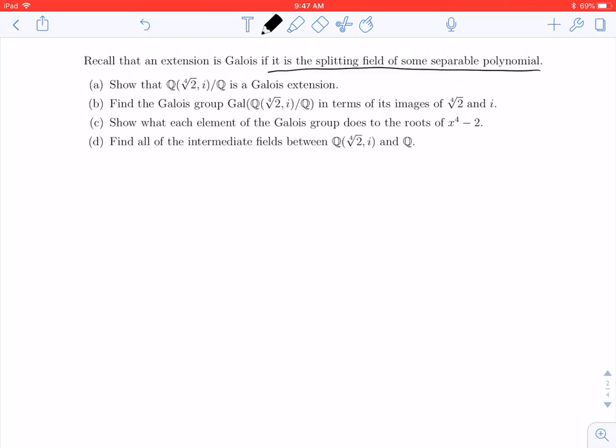So the only thing we need to do is show that Q adjoin the fourth root of 2 comma i is a splitting field of some polynomial over Q.